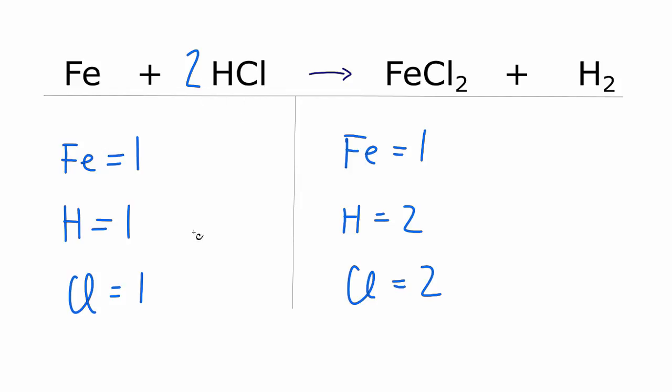So we have one chlorine times two, that equals two, and the one hydrogen times the two, that equals two.